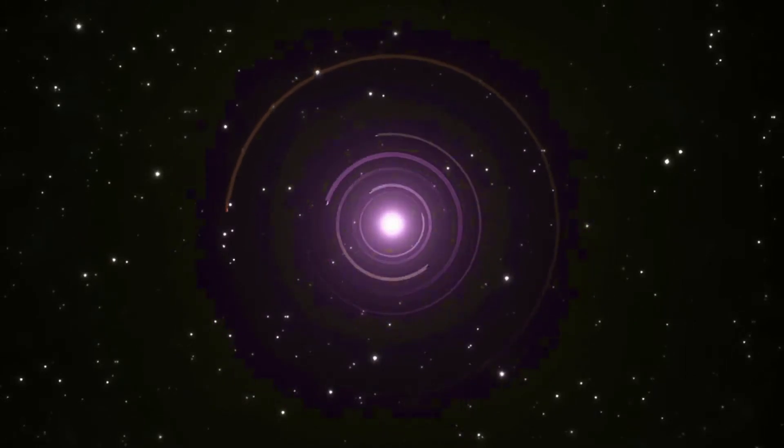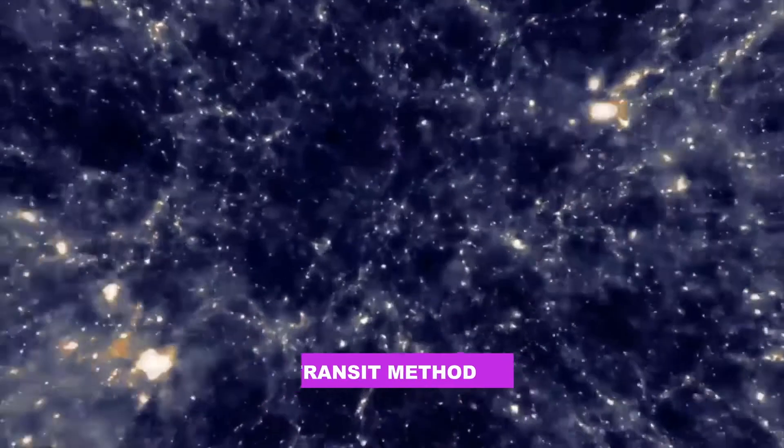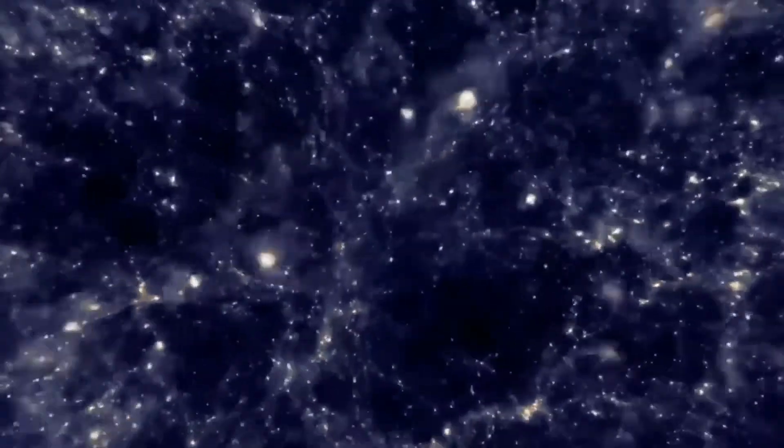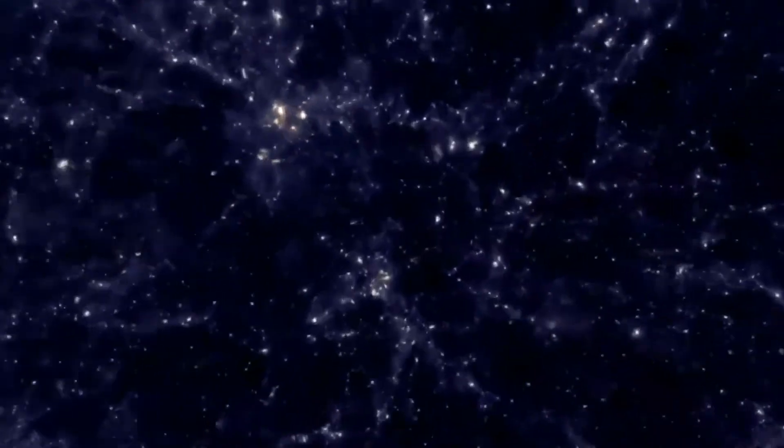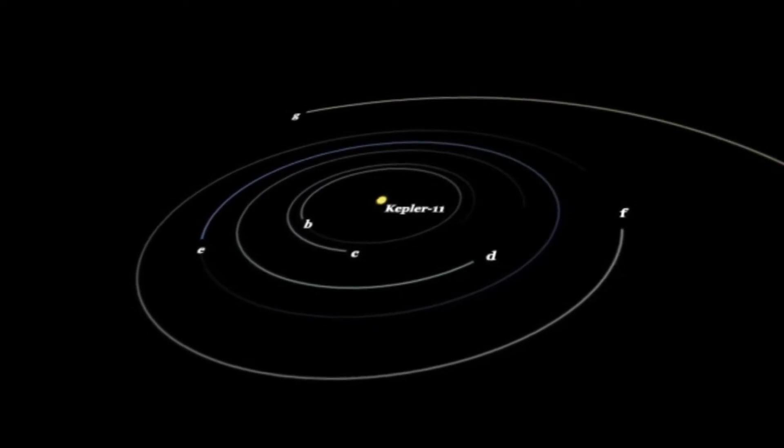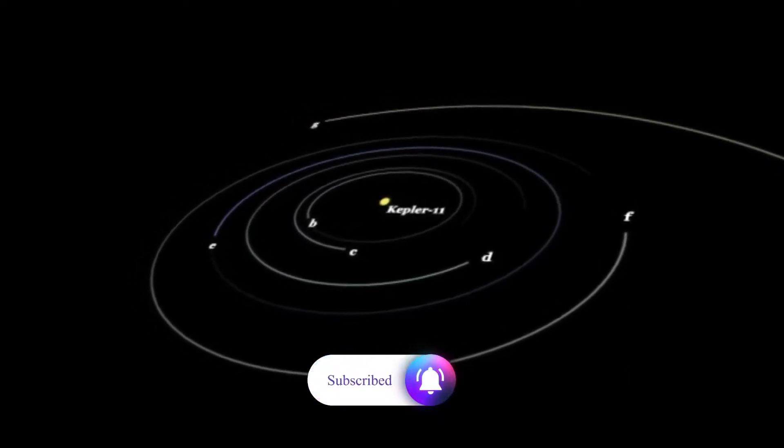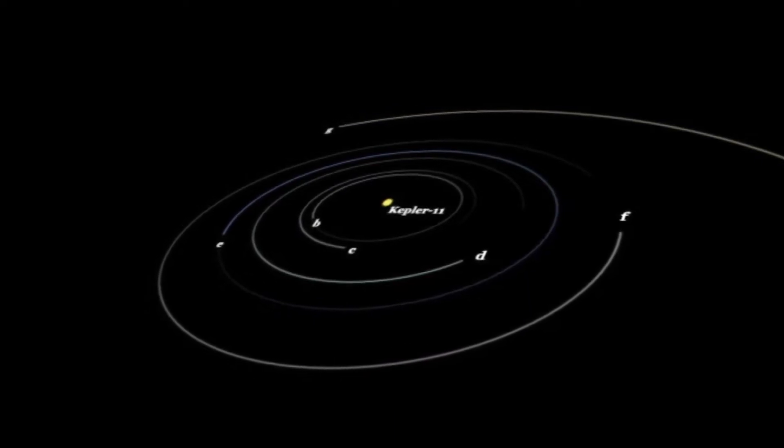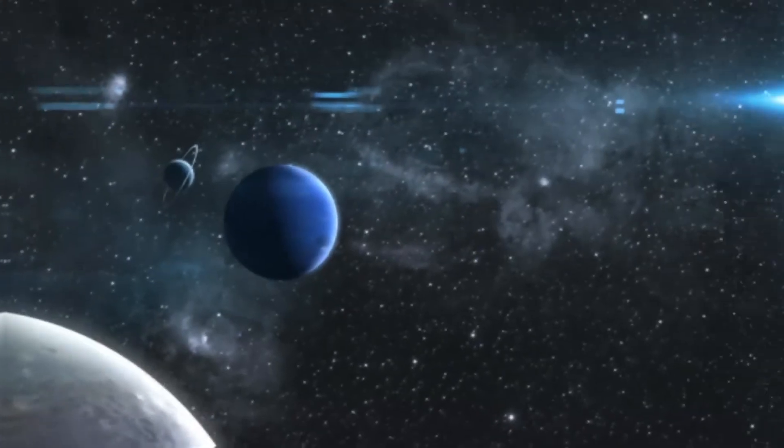This beautiful exoplanet was discovered using the transit method in which the dimming effect that a planet causes as it crosses in front of its star is measured. This transit causes a slight and regular change in the host star's brightness, which can then be tested to prove the planet's existence and later to extrapolate the orbital parameters of the planet.